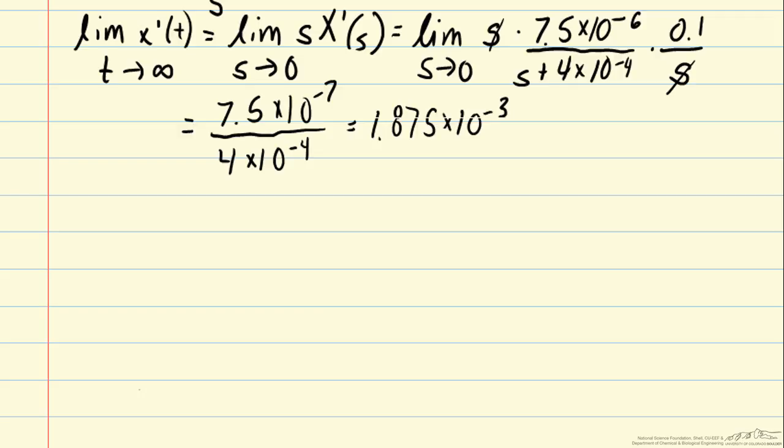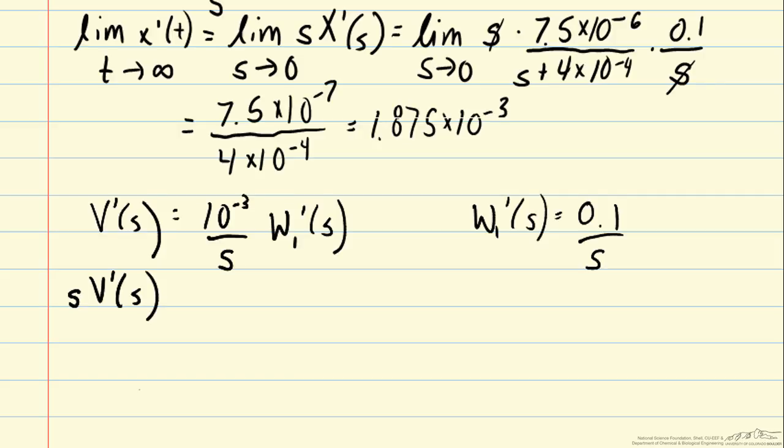In the blending process, we want to control x, which is the mass fraction of species A leaving the tank. We also have dynamics for the volume. So we had previously computed that as 10 to the minus 3 over s times w1 prime of s, where w1 prime of s was a step input of height 0.1. And so we could go ahead and calculate that term sV prime of s is 10 to the minus 3 over s times 0.1 over s times that s. And so that gives us 10 to the minus 4 over s.